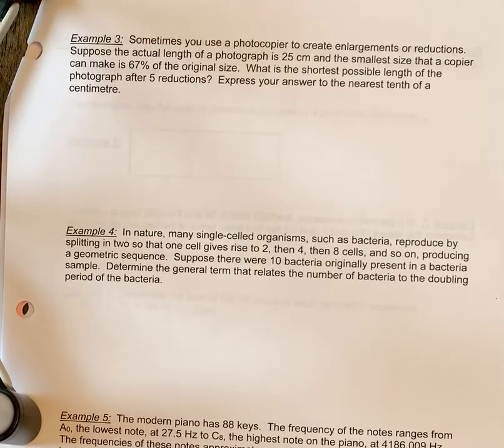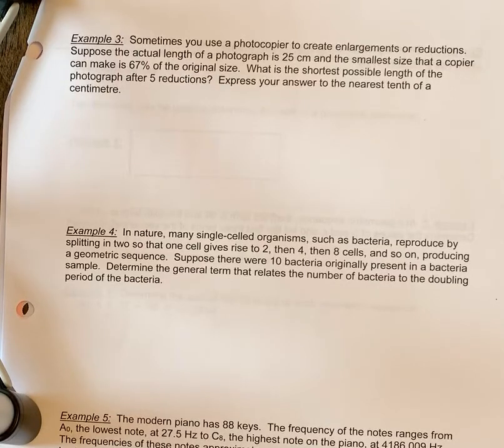Example three. Sometimes you use a photocopier to create enlargements or reductions. Suppose the actual length of a photograph is 25 centimeters and the smallest size that a copier can make is 67% of the original size. What is the shortest possible length of the photograph after five reductions? Express your answer to the nearest tenth of a centimeter.